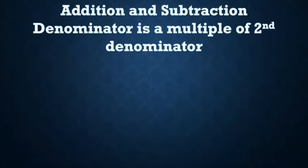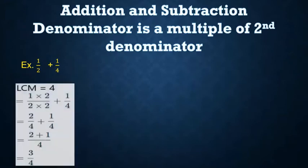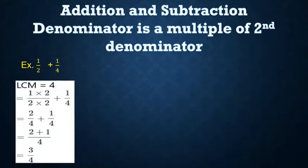Now, what if you want to add or subtract fractions where one denominator is a multiple of the other? For addition, our example is 1/2 + 1/4. Notice that 4 is a multiple of 2, so the LCM of 2 and 4 is 4. It becomes (1×2)/(2×2) + 1/4 = 2/4 + 1/4 = 3/4. Therefore, 1/2 + 1/4 = 3/4.